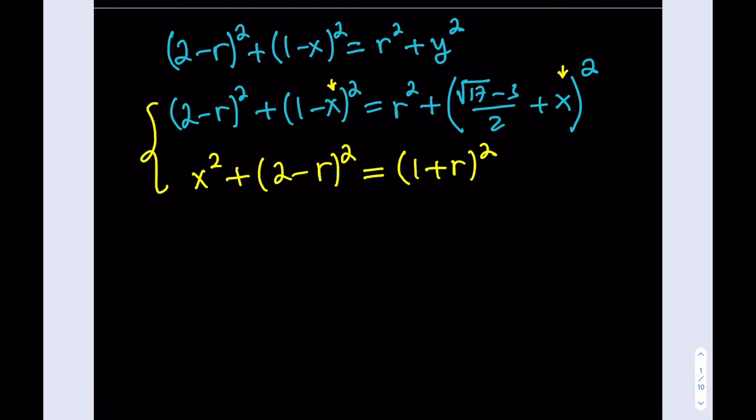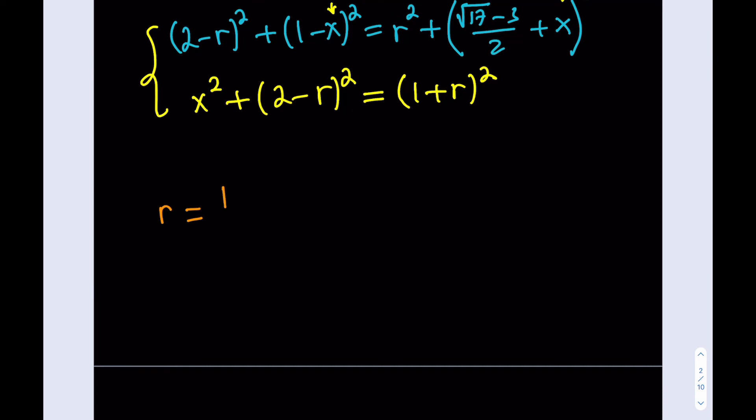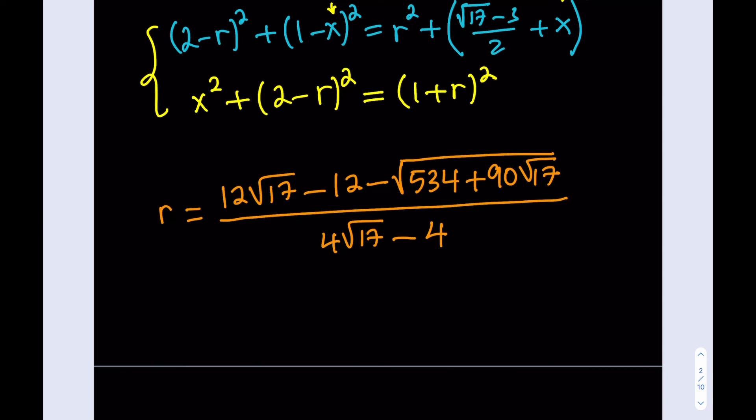Or, you can subtract these two equations side by side. And try to simplify that way. And then let me know how that goes. I mean, if you get the same result. Or which method is better, easier. I'd like to hear your thoughts on that one. But, here comes the solution. Ta-da! So, based on these two equations, the radius of the blue circle is equal to 12 times the square root of 17 minus 12 minus the square root of 534 plus 90 times the square root of 17, all over 4 times the square root of 17 minus 4. Phew! What a result.